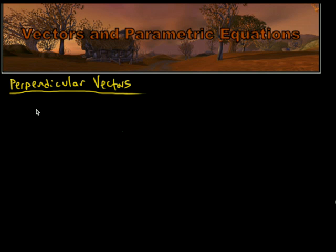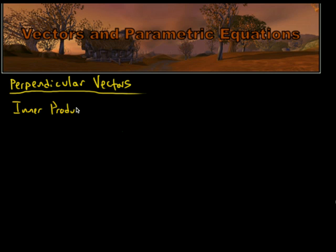Greetings and welcome. In today's lesson we're going to talk about perpendicular vectors both in a plane and in space. We're going to have pretty much two formulas — technically three — that we're going to look at. The first one is called the inner product, sometimes also referred to as the dot product.